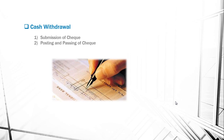The second step is posting and passing of the check. The bank officer posts the check into the customer's account, the signatures are compared with the specimen signature, and the amount is recorded into the cash scroll. The third step is delivery of the check to the cashier. After passing and recording, the check is delivered to the cashier, who verifies the payee, makes an entry in the cash book, and makes the payment to the person at the counter.